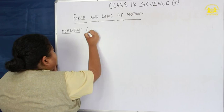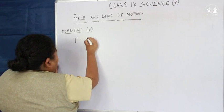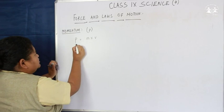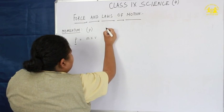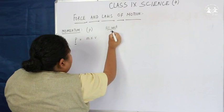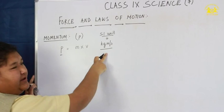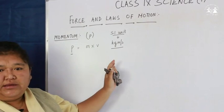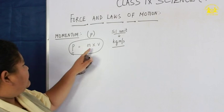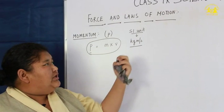Momentum is denoted by the letter P. Momentum can be defined as the product of mass and velocity. The unit of mass is kg and the unit of velocity is meters per second. So the unit of momentum is kg meter per second. The momentum formula is P is equal to M times V.